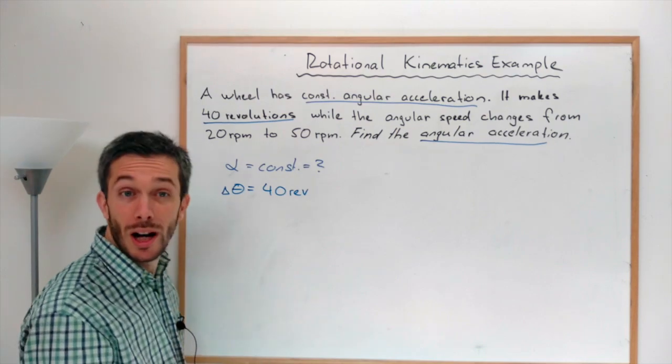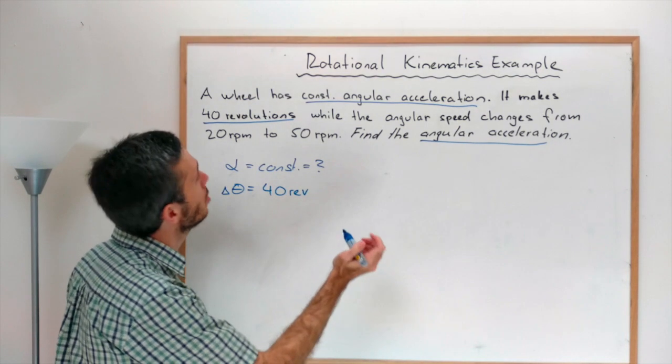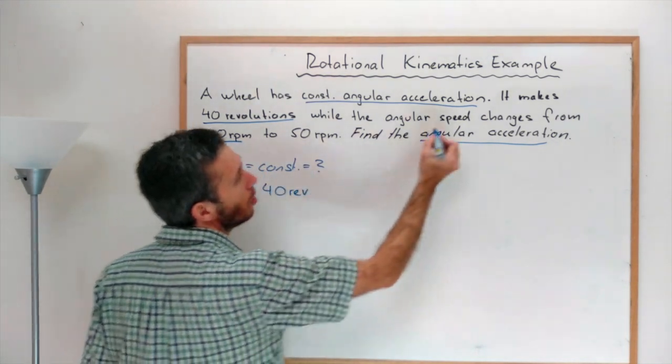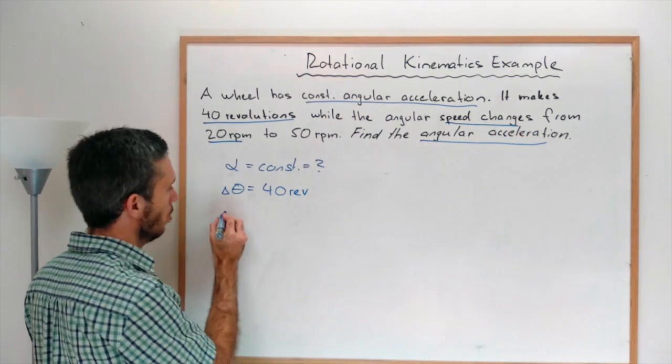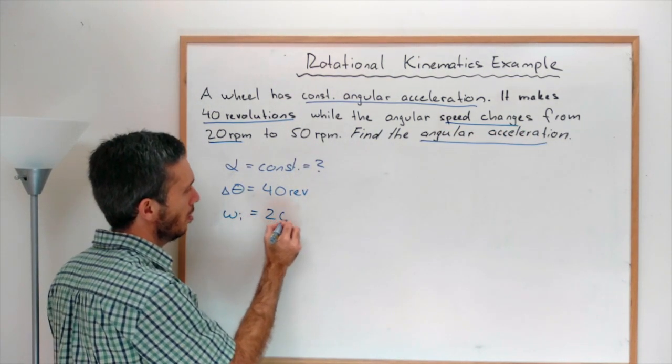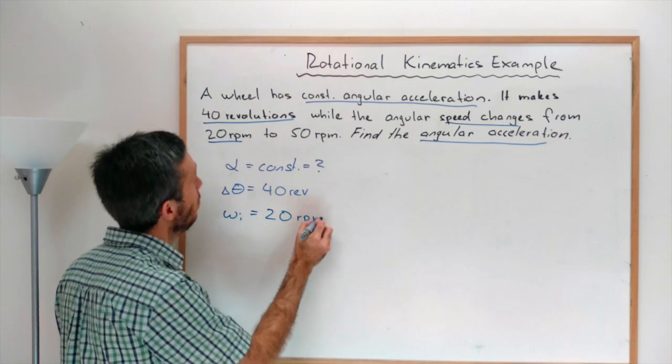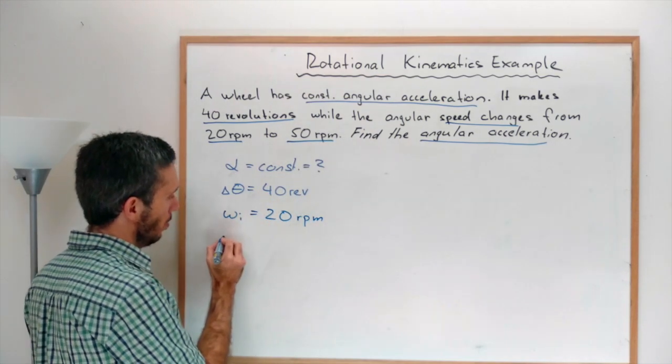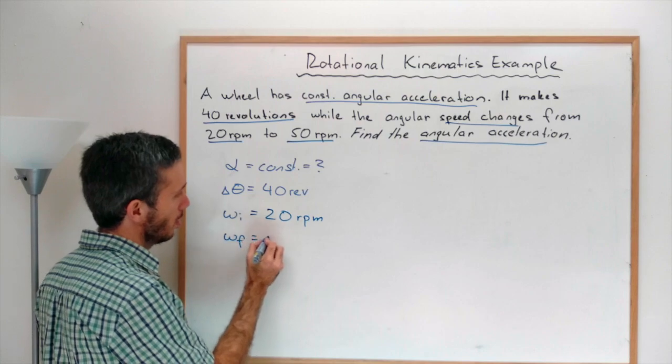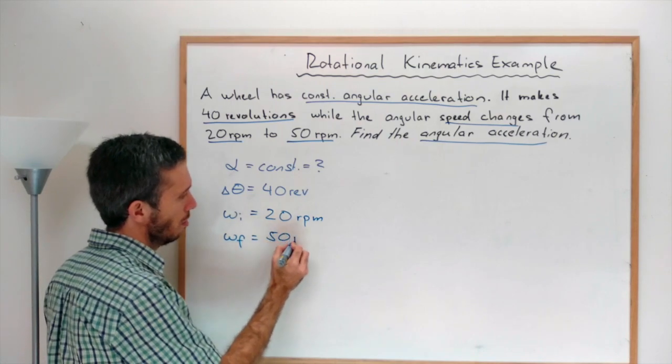While the angular speed changes from 20 rpm, so we know omega initial is 20 rpm to 50 rpm. So you have omega final is 50 rpm.